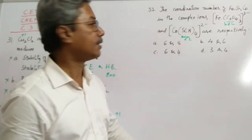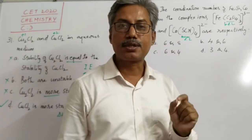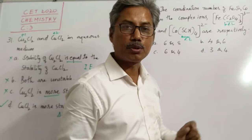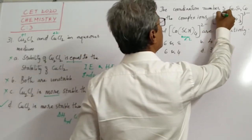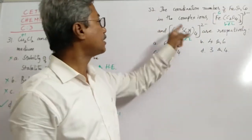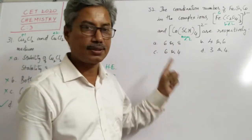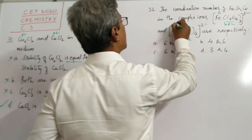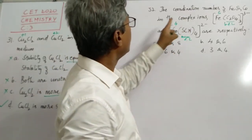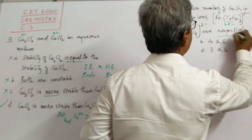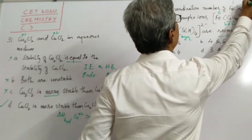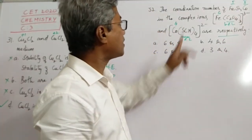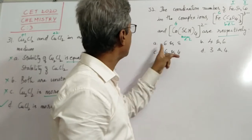For the Fe complex, oxalate is a bidentate ligand. To find the coordination number, look at the number of ligands attached and multiply by two. There are three ligands, so three multiplied by two gives a coordination number of six for Fe. For cobalt, the cyano ligand is monodentate, so the coordination number equals the number of ligands attached. Four ligands are attached, giving a coordination number of four. The answer lists Fe first, so six should come first.